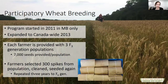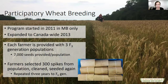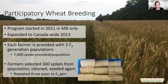The genetic material I'm using within this experiment is from a participatory wheat breeding program. It started in Manitoba in 2011 and expanded Canada-wide in 2013. Farmers were sent F3 seeds from crosses and they planted them in small plots on their farm. They selected 300 spikes, the seed was cleaned and sent back, and then they planted the small plots again. They repeated this three times so that we end up with an F6 generation. The populations used in this experiment are from the F6 generation.